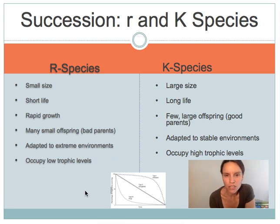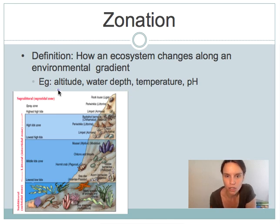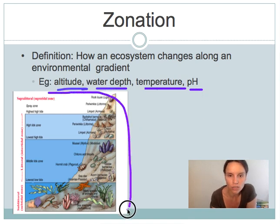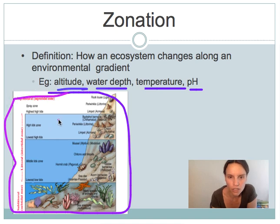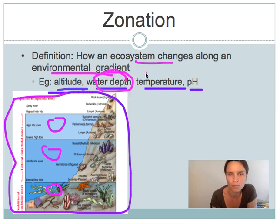Ecosystems also change along what we call an abiotic gradient — a non-living aspect of the environment such as temperature, water depth, altitude, or pH. This process is called zonation. In the example shown here, different colors of blue represent different zones of an intertidal area, and you can clearly see that different things live in each zone. The ecosystem changes dramatically along the environmental gradient of water depth, which also affects temperature.